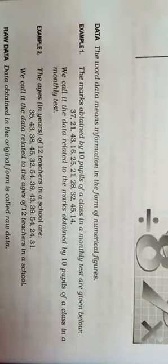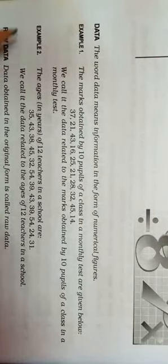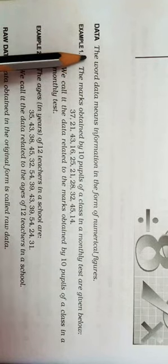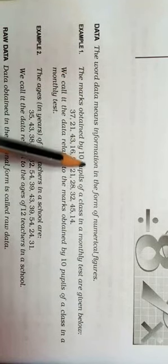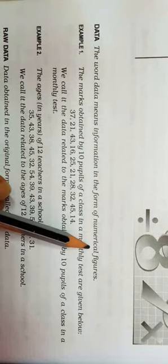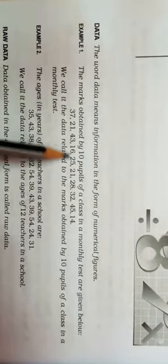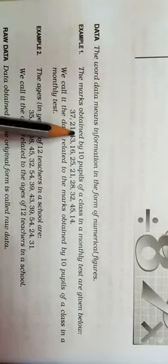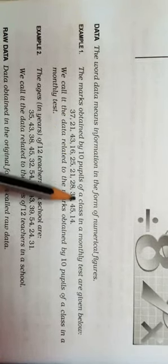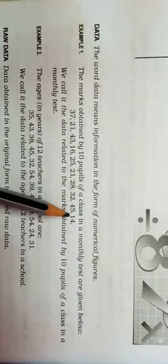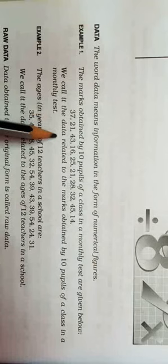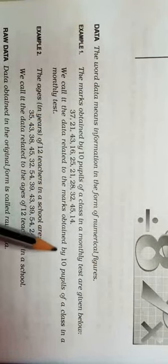First, we need to know what data is. The word 'data' means information in the form of numerical figures. For example, the marks obtained by 10 people of a class in a monthly test — such as 37, 21, and so on — we call this the data related to marks obtained by 10 people of a class in a monthly test.